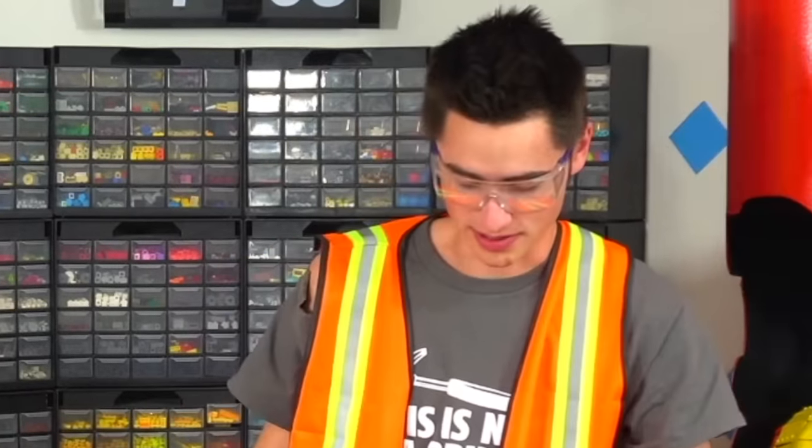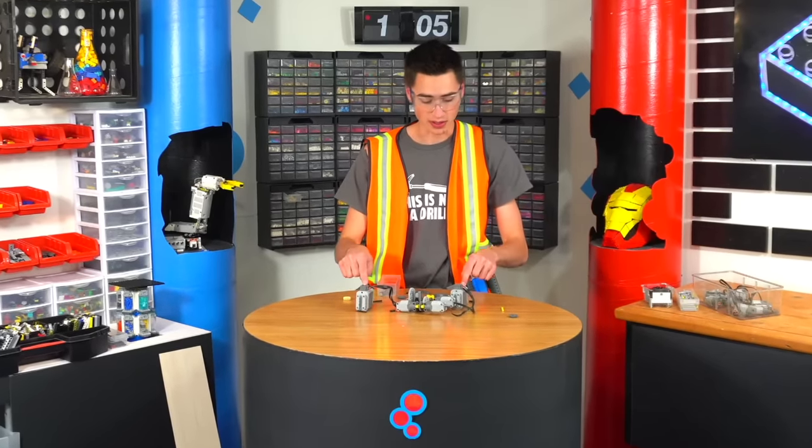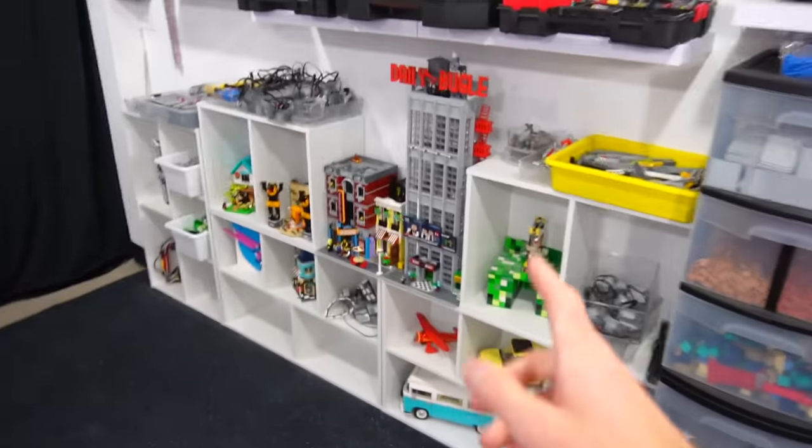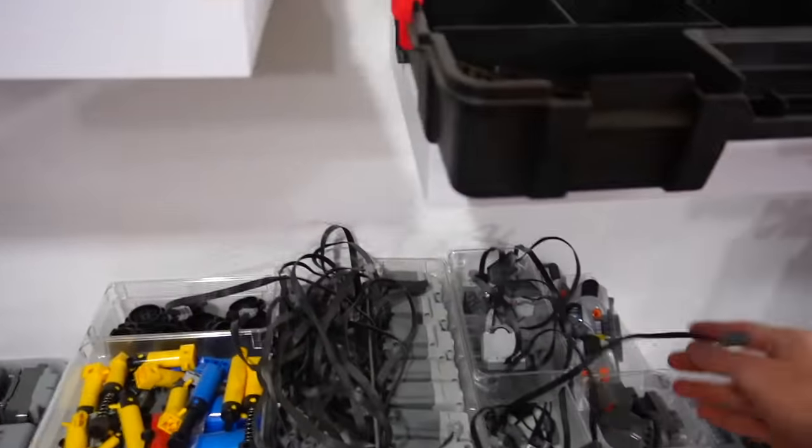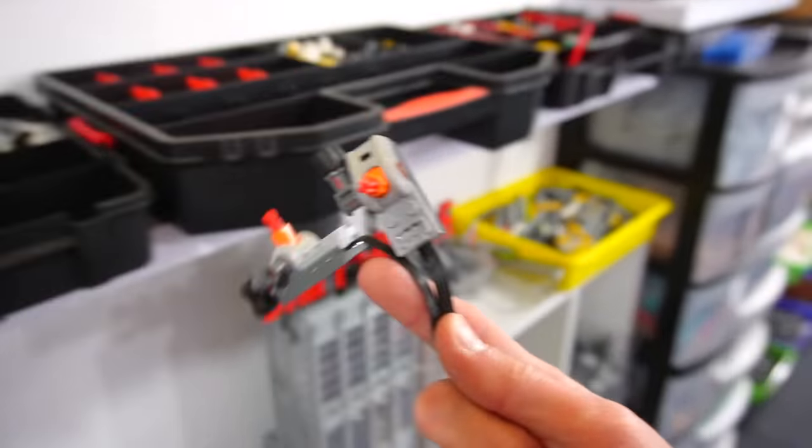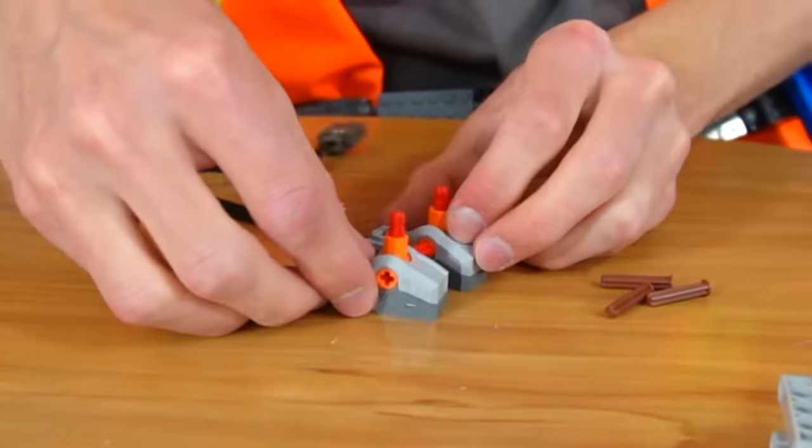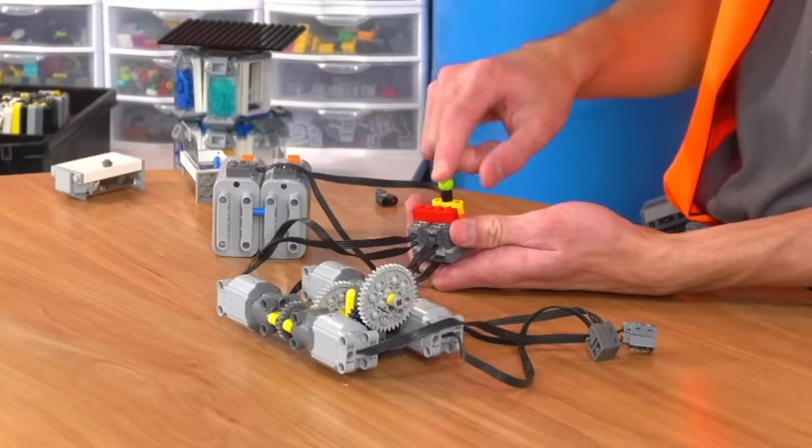Okay, so the next step is to make this not dangerous, which means we need to hook these up to a switch. For the switch we're just going to use two of these Lego switches, which I literally hate, but it's all they make. So we'll connect these two together. Now we flick the switch, it turns on.